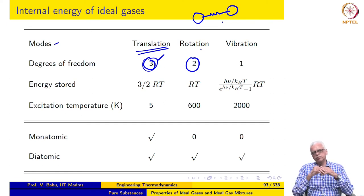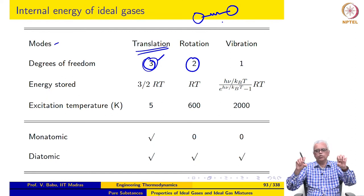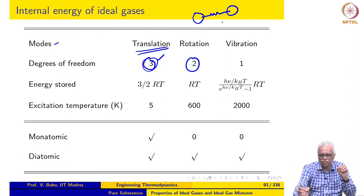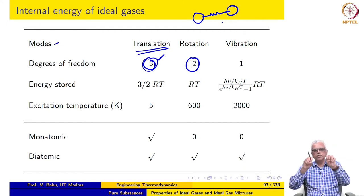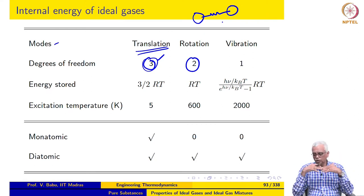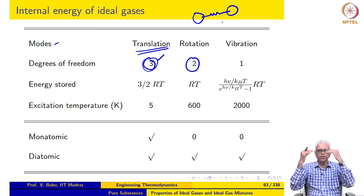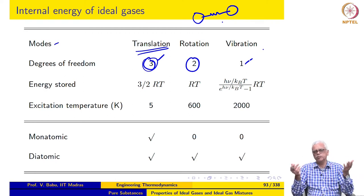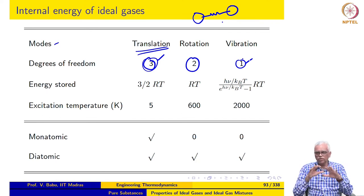As we keep increasing the temperature, at higher temperatures the molecules connected through a bond can also store energy in the form of vibration. If we model this bond as a spring, this spring begins to vibrate at higher temperatures, so energy can be stored as vibrational energy in the bonds. Depending on the number of vibrational levels excited, you could keep storing energy in each mode. For this course, we will say that vibration adds one more degree of freedom, for simplicity.